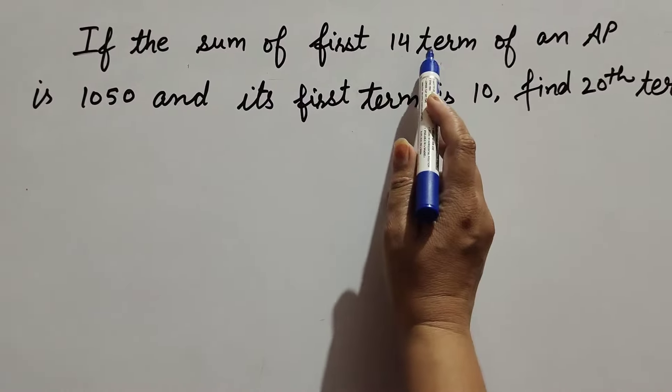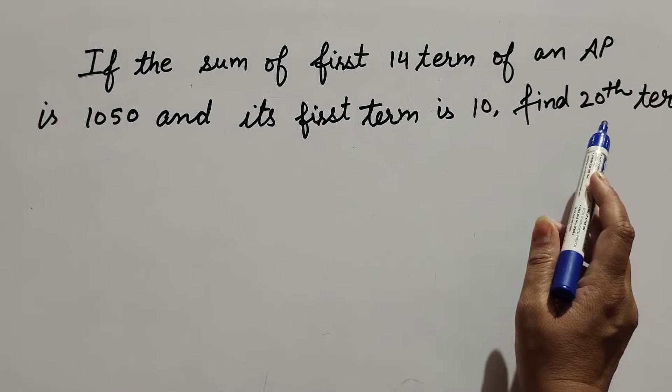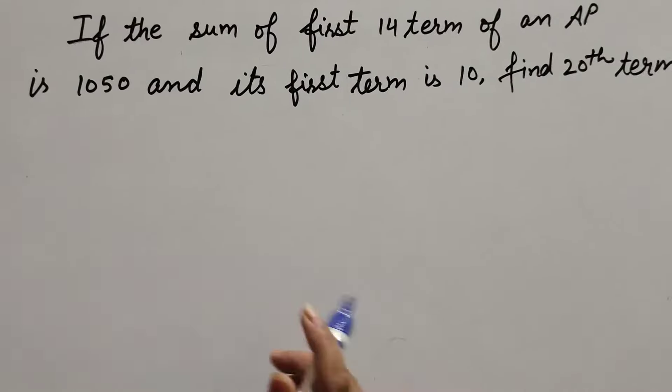So in this question, the given things are: sum of 14 terms is equal to 1050 and first term of the AP is 10. We find the 20th term of the AP.